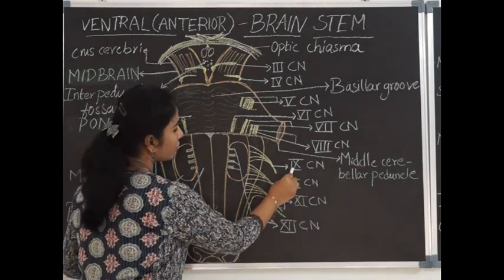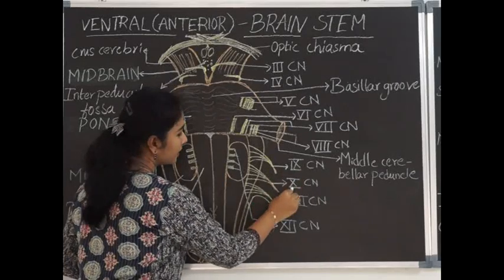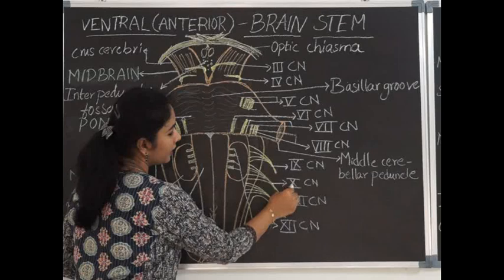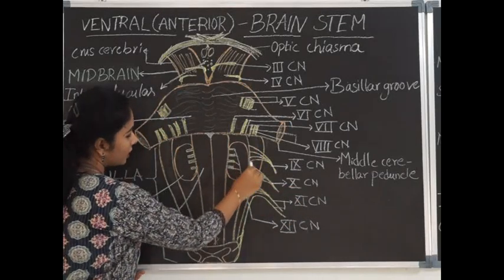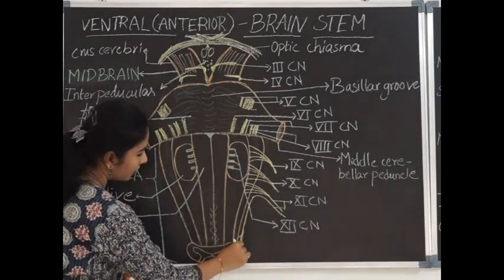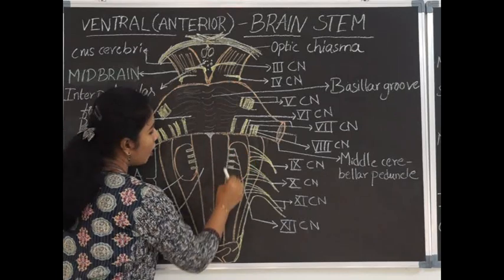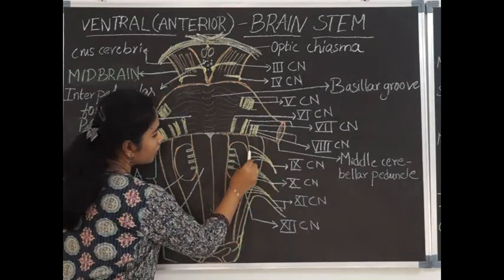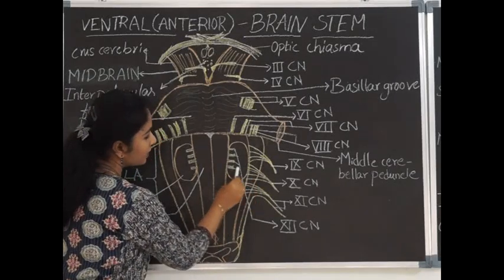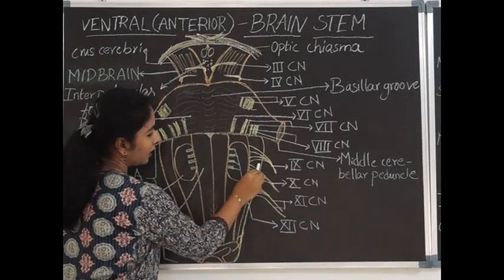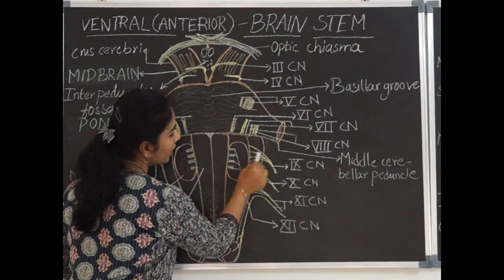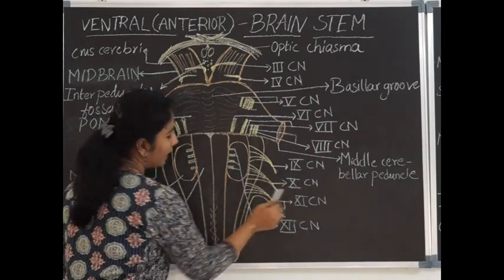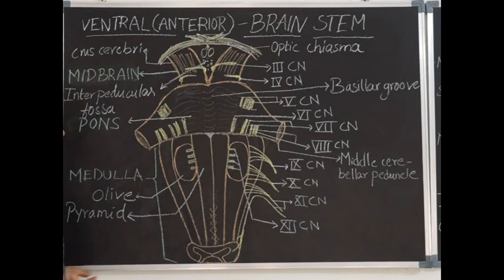The 9th is the glossopharyngeal nerve, 10th is the vagus and 11th is the spinal accessory. These three cranial nerves get their origin from the posterolateral sulcus, which separates the olive from the inferior cerebellar peduncle. This groove is called the posterolateral sulcus, and from it arise the rootlets of the 9th glossopharyngeal, vagus and 11th spinal accessory nerve.